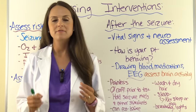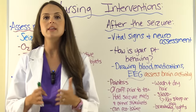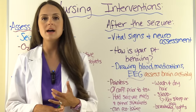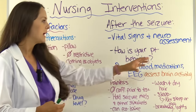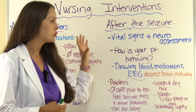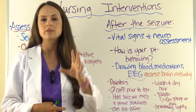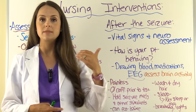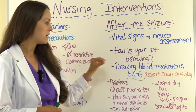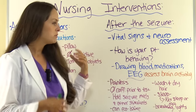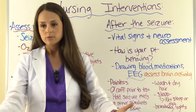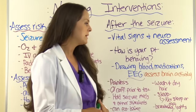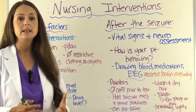After the seizure, ensure the patient is stable. Check vital signs, especially the airway, and perform a neuro assessment. Note how the patient behaves in the post-ictus phase, as different seizure types present differently. After notifying the doctor, you may receive orders to draw blood to check drug levels or other labs, and may be giving medications.